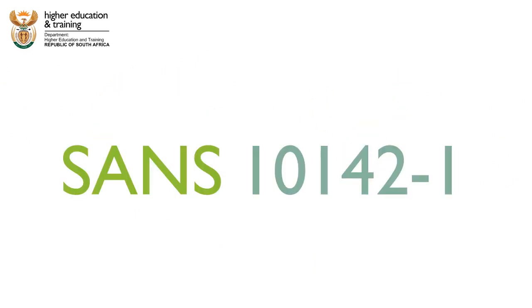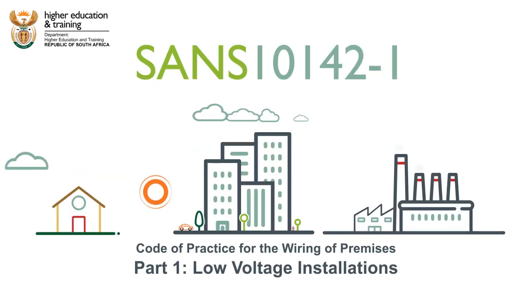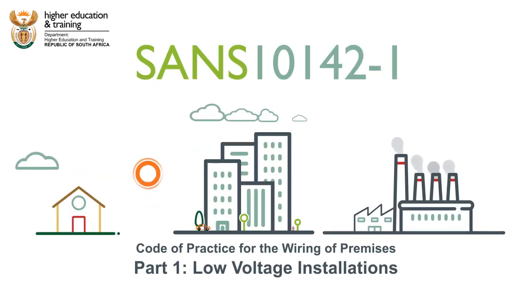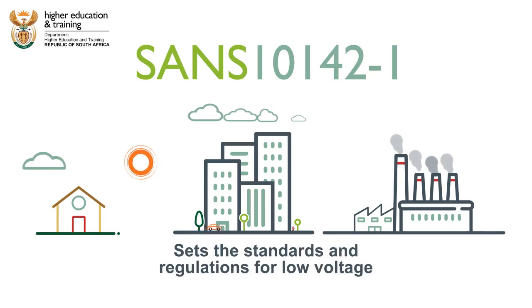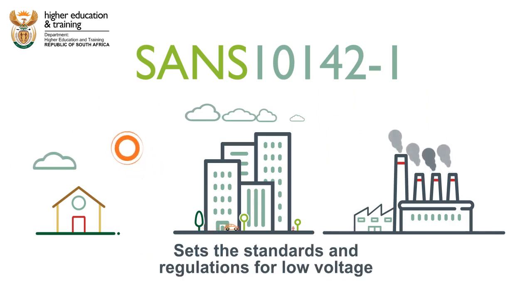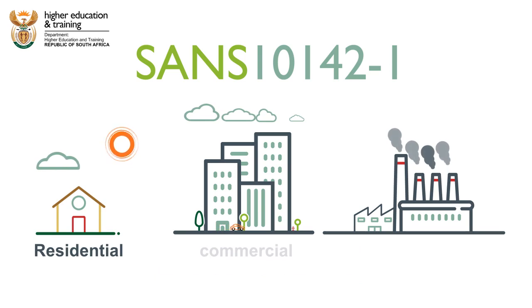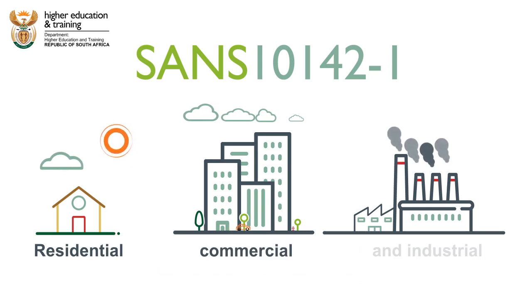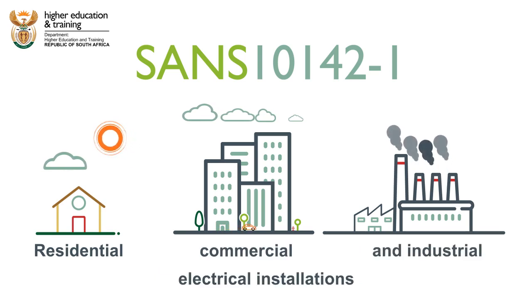SANS 10142-1, also known as the Code of Practice for the Wiring of Premises, Part 1, Low Voltage Installations, sets the standards and regulations for low voltage residential, commercial and industrial electrical installations.